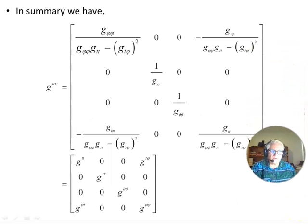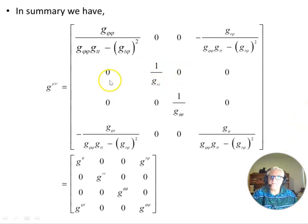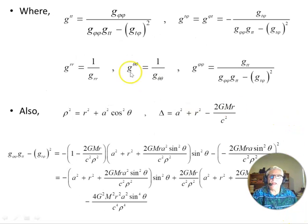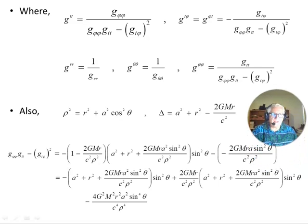Here's our inverse metric from earlier. This term is this one, and this term is this one. g^tt is this object here—that's both indices up from the inverse metric. Each of these terms has this form. Just reminding ourselves: rho squared was that object, and delta is this one. Now what we can do is tidy up this denominator which occurs often.